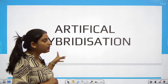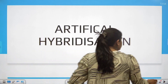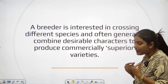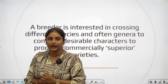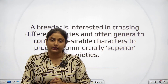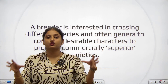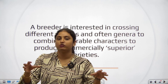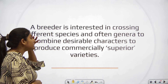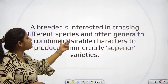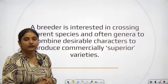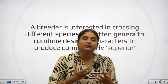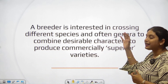The next topic is artificial hybridization. A breeder is interested in crossing different species. There are some breeders who fuse different plants to observe desired varieties, so that they can get a plant that has specialized qualities. The breeder is interested in crossing different species, generally to combine desirable characteristics and produce commercially superior varieties, so that some good varieties can come out.